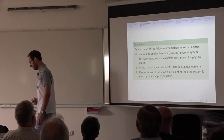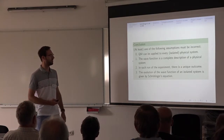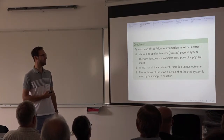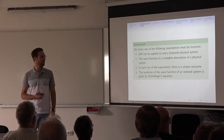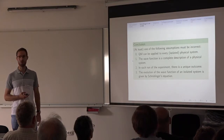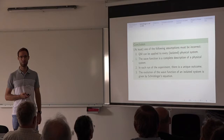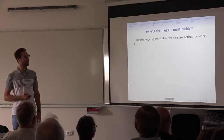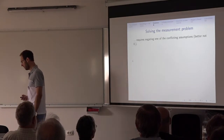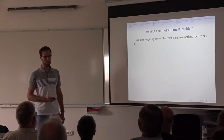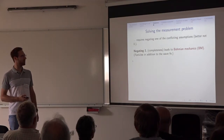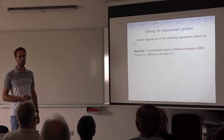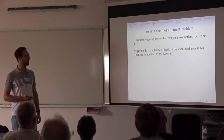So what are the conclusions? At least one of our assumptions must be wrong. To repeat them: assumption zero — quantum mechanics can be applied to every isolated physical system — is one we probably don't want to deny. Assumption one — the wave function is a complete description of a physical system. Assumption two — in each run of the experiment there is a unique outcome. And assumption three — the evolution of the wave function of an isolated system is given by Schrödinger's equation. So one of them has to go. Negating the first assumption — completeness — is the way that Bohmian mechanics chooses. It adds particles in addition to the wave function, which are actual trajectories guided by the wave function.